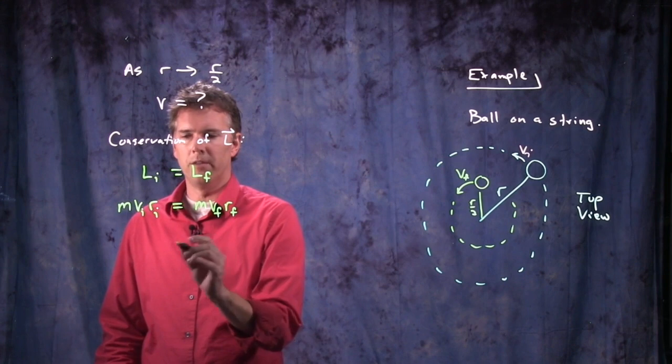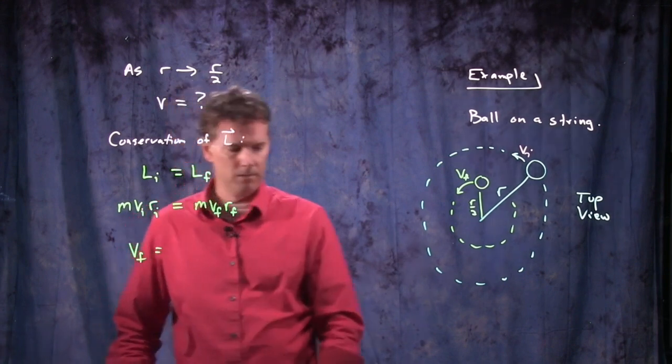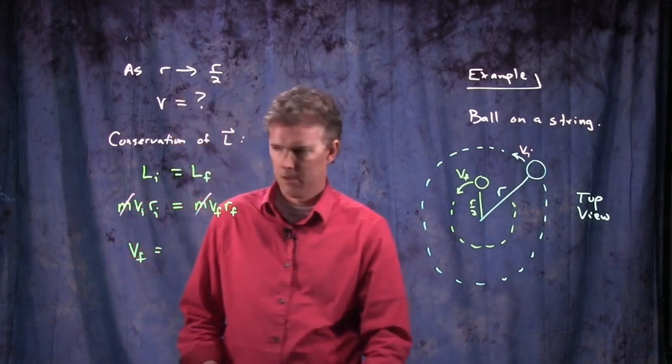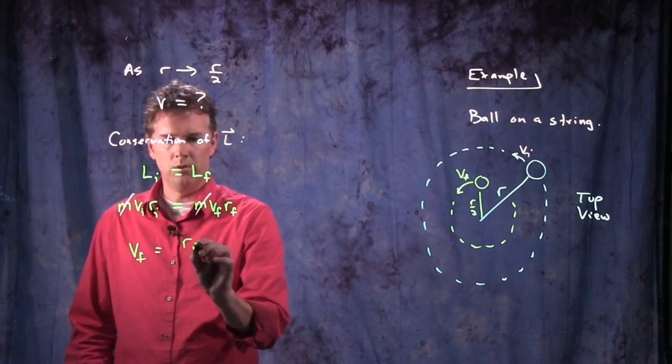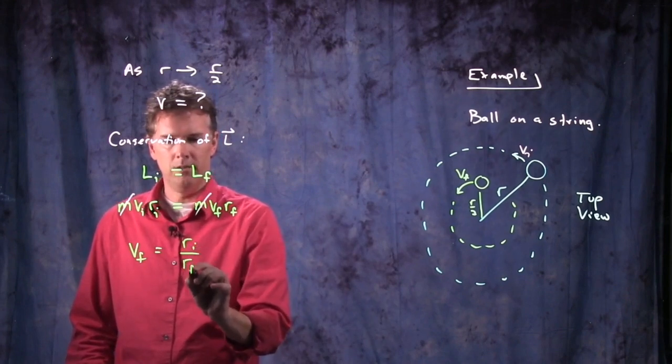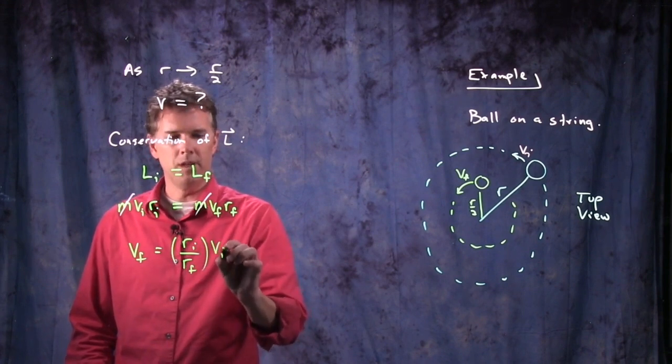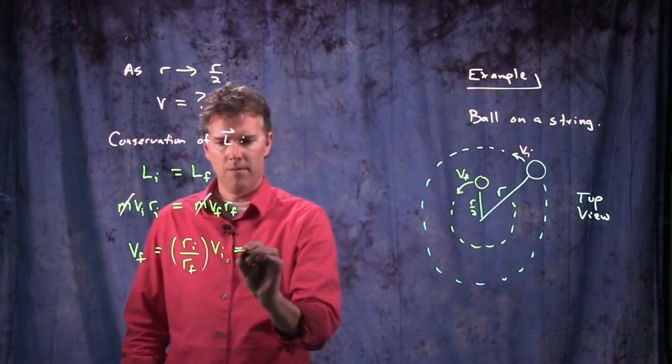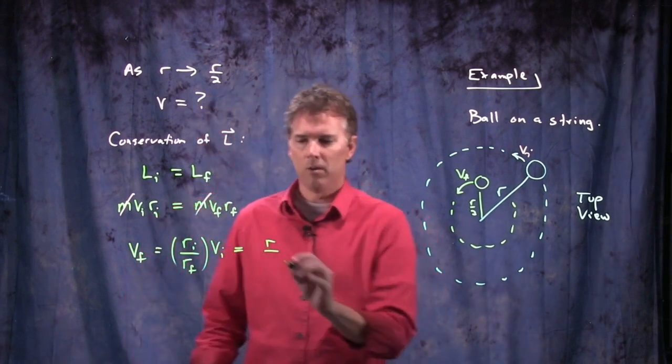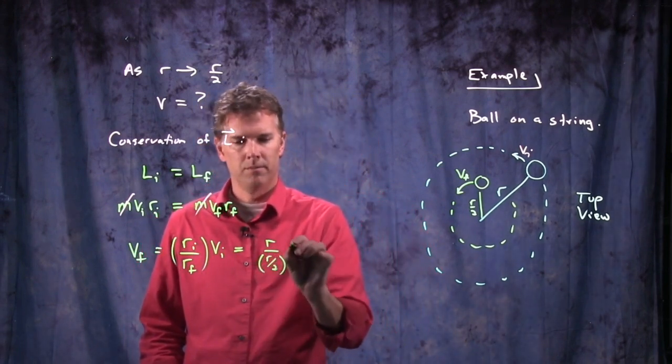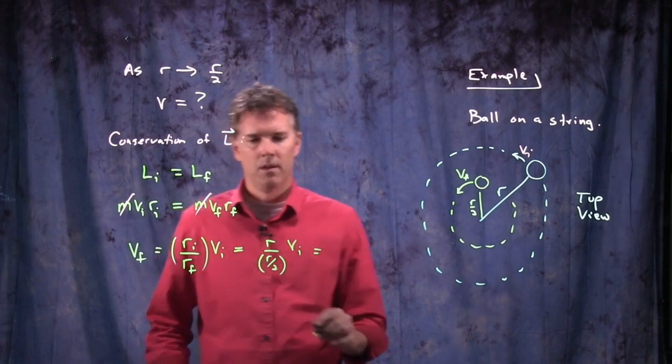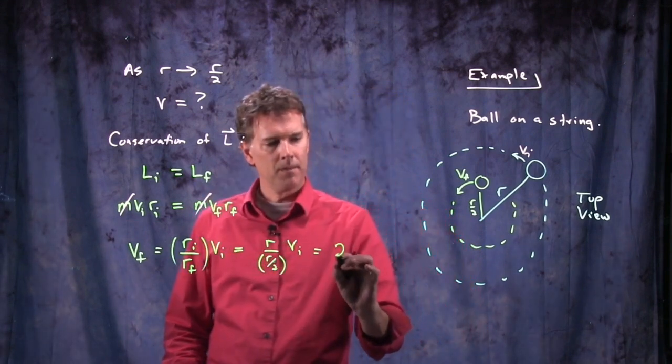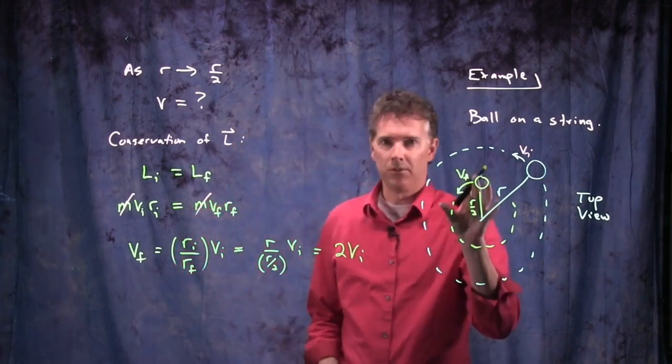Alright, we want to solve this thing for V final. V final is equal to what? Well, the M's cancel out. That's really nice. And we're just left with R initial divided by R final, all of that times V initial. In our case, we said that R initial was just R. R final was R over 2. The R's drop out, the half on the bottom flips up to be a 2 up on the top. And we get twice the speed.